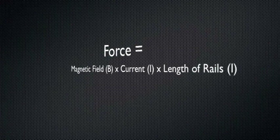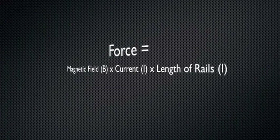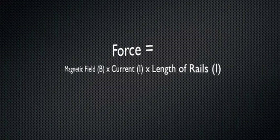The force can be calculated by using the equation force equals magnetic field times current times the length of the rails.